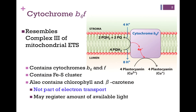Cytochrome B6F resembles very much Complex 3 of the mitochondrial electron transport system. It contains two cytochromes, B6 and F, and also an iron-sulfur cluster, very similar to Complex 3. It also contains chlorophyll and beta-carotene, but these do not appear to be a part of electron transport. Instead, they seem to register the amount of available light, as if the system is determining if there's sufficient light energy to continue to carry on the process of photosynthesis.